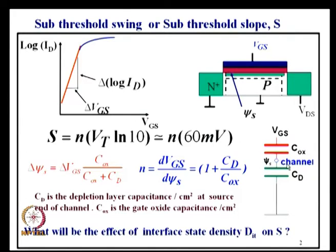From these two capacitances, any change in the gate voltage will result in a change in psi_s decided by the capacitance ratios. Delta psi_s equals delta Vgs divided by the sum of the two capacitors, multiplied by C_oxide — that is a standard basic relationship. From here, delta Vgs by delta psi_s is 1 plus C_d by C_oxide, where C_d is the depletion layer capacitance per unit area and C_oxide is oxide capacitance per unit area.